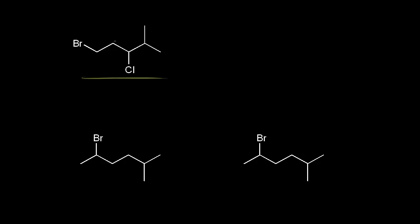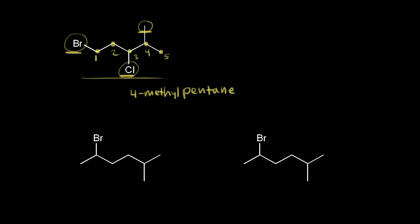Now let's name this compound. Count up the carbons in the longest chain: one, two, three, four, and five — a five-carbon alkane is pentane. Next, number the carbon chain to give the lowest number to the first substituent. Numbering from the left gives the bromine a one, so that's the best way: one, two, three, four, five. We have a methyl group at four, a chlorine at three, and a bromine at one. Putting these in alphabetical order: bromine first, then chlorine, then methyl — the full name is 1-bromo-3-chloro-4-methylpentane.